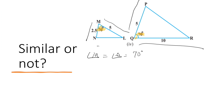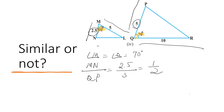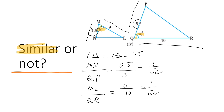Now let us find the corresponding sides. MN by QP is equal to 2.5 by 5, that is equal to one half. ML by QR is equal to 5 by 10, that is equal to one half. So one angle and the ratios of the sides including that angle are equal. Therefore the triangles are similar by SAS similarity criterion.